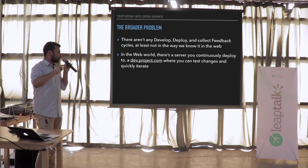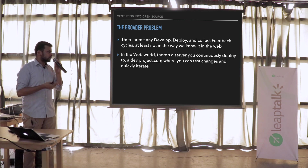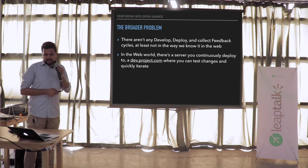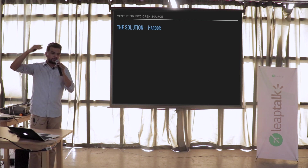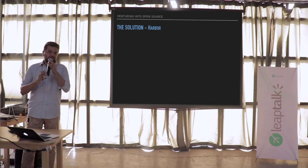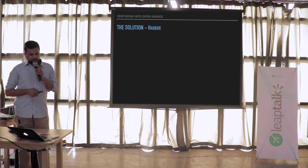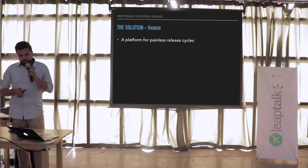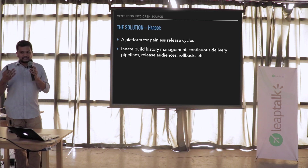We had a dev.project.com where you could continuously deploy on the web side. If something worked, it was fine; if something didn't work, we'd deploy another fix. For someone moving from this style of deployments to the mobile style, it's really difficult. The first solution was a Python script that would do all the documentation steps, attach it to an email with some boilerplate content and send it — we even had a fake email address for this. But the broader solution would eventually take the name Harbor: a mobile app that allowed for painless release cycles, with build history management, continuous delivery pipelines, release audiences, rollbacks, et cetera.